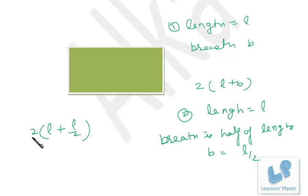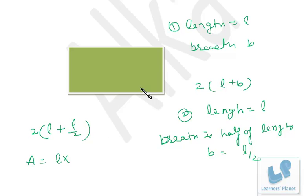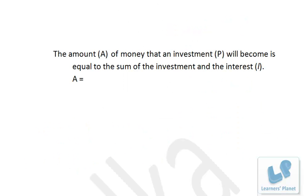If you are asked about the area of this rectangle where breadth is L by 2, area equals length into breadth, so it is L into L by 2, which is L squared by 2.